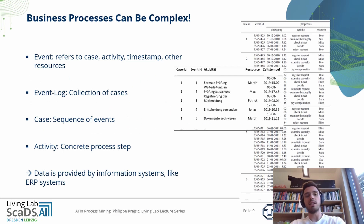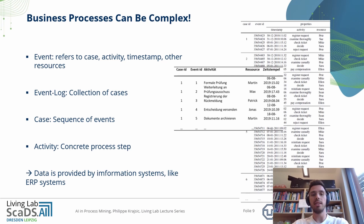Here we can see the data we work with — it's a so-called event log. An event log can be extracted from different information systems like ERP systems and consists of a sequence of cases, and those cases again consist of a sequence of events. Each event refers to a case, an activity, a timestamp, and other resources or attributes. Each activity represents a concrete process step, for example, paying the bill.